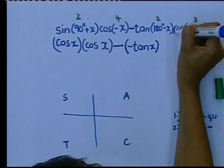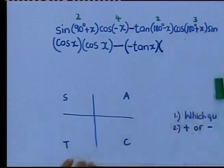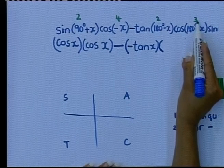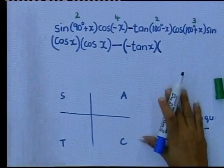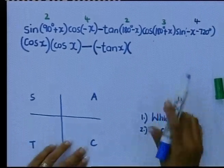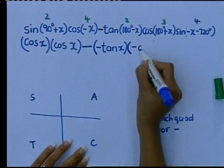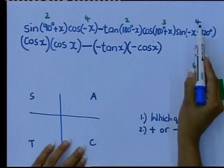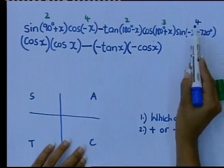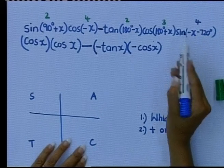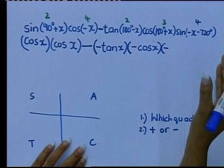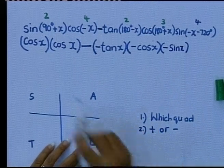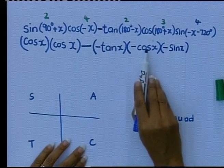There is no sign there, so I open up my bracket immediately. I didn't do it before because there was a negative. 180 plus x is in the third quadrant. How is cos in the third quadrant? Cos is negative. Does my name change? No. So this is just negative cos x. And last but not least — negative x minus 720 is in the fourth quadrant. How is sin in the fourth quadrant? It is negative. Does my name change? No. And I've just got the sin of x. If I mark this at the end of the year, you have scored five marks.